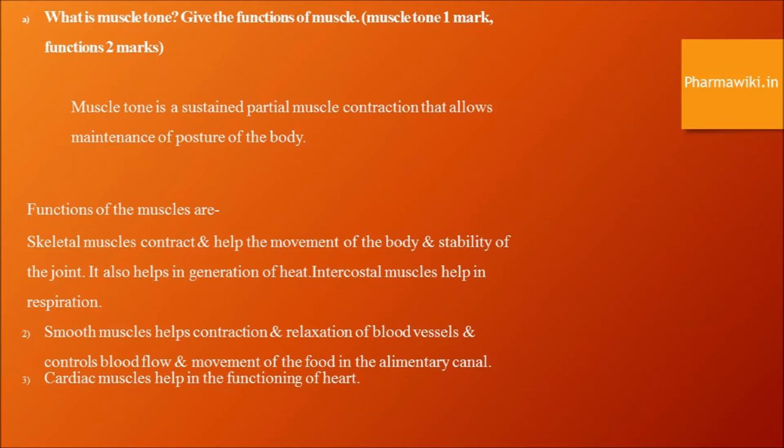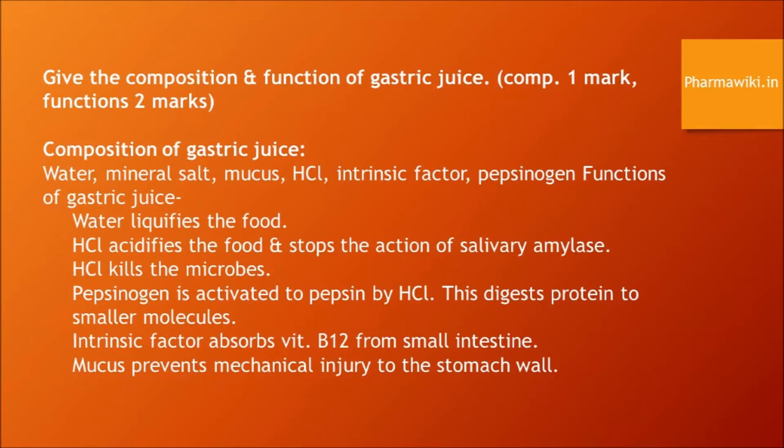Composition and functions of gastric juice. Composition: water, mineral salts, mucus, HCl, intrinsic factor, and pepsinogen. Functions: water liquefies the food; HCl acidifies the food and stops the action of salivary amylase; HCl kills microbes; pepsinogen is activated to pepsin by HCl, which digests protein to smaller molecules; intrinsic factor absorbs vitamin B12 from the small intestine; mucus prevents mechanical injury to the stomach wall.